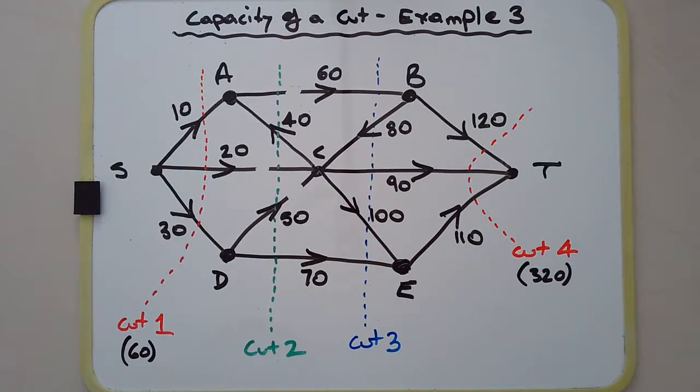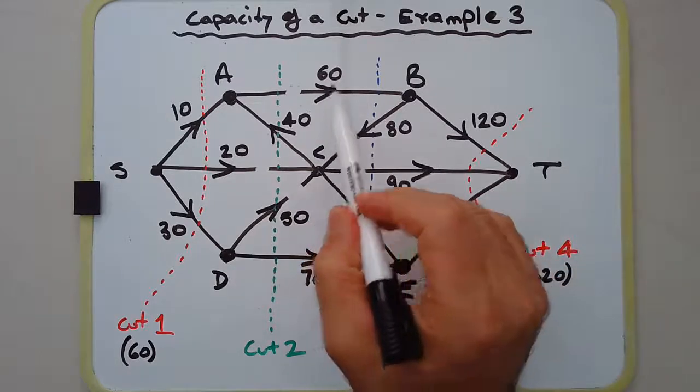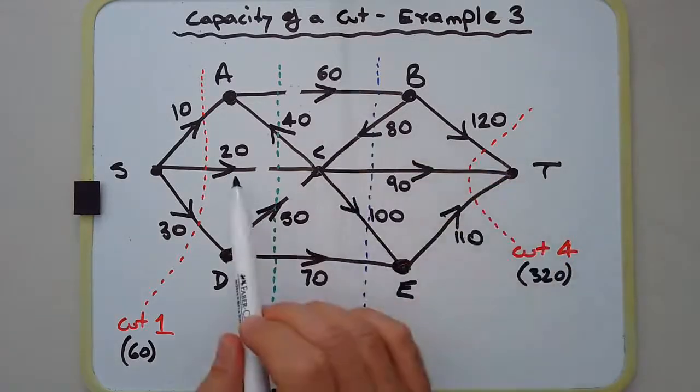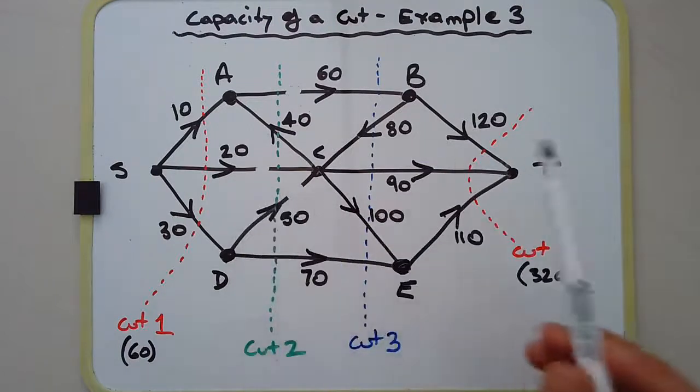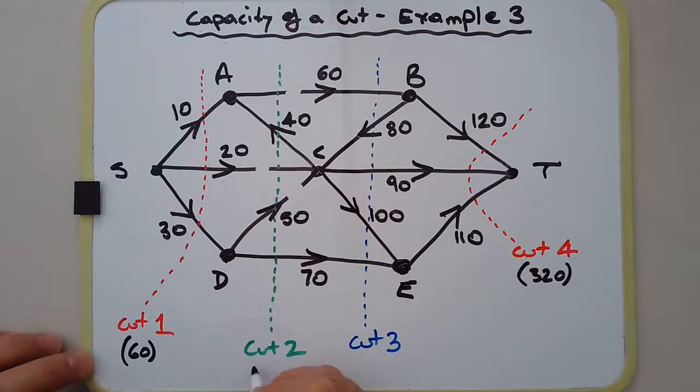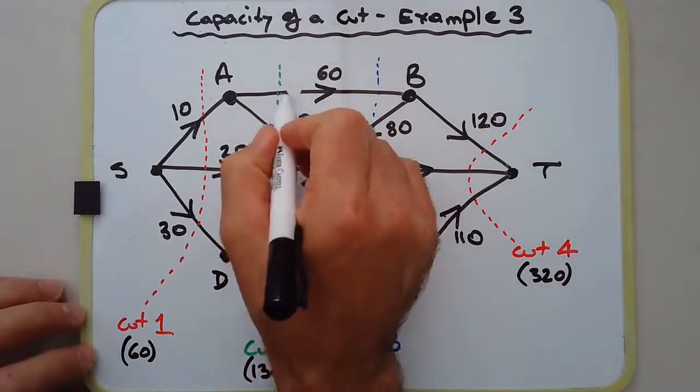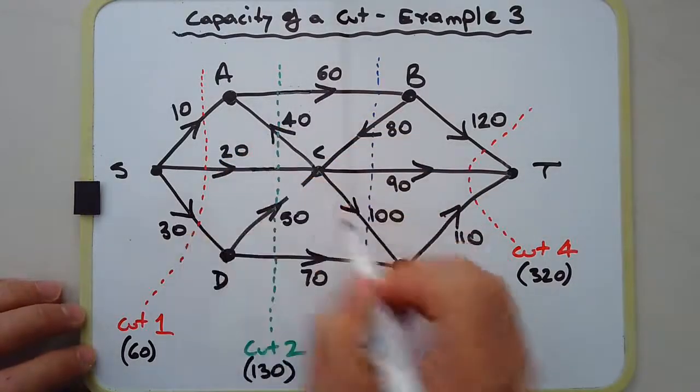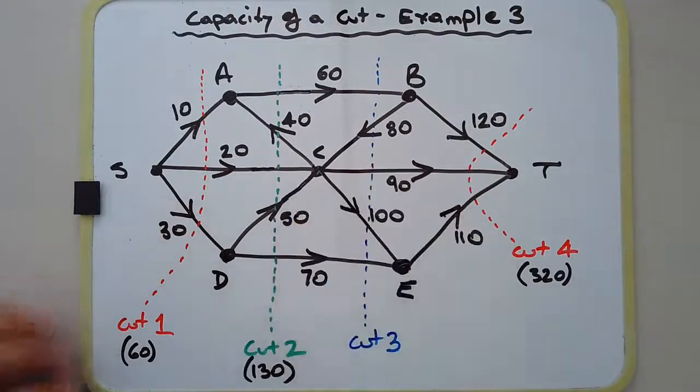So we've got three edges here: 60 plus 20 plus 50, and that gives us 130 as the capacity for cut number two.